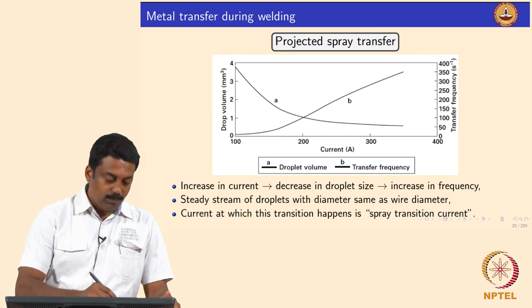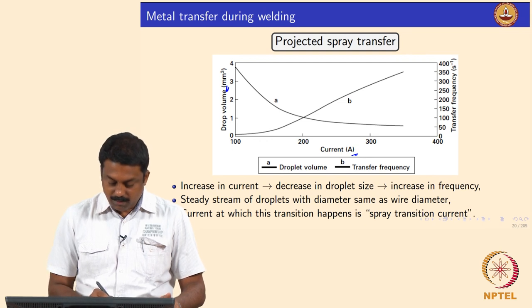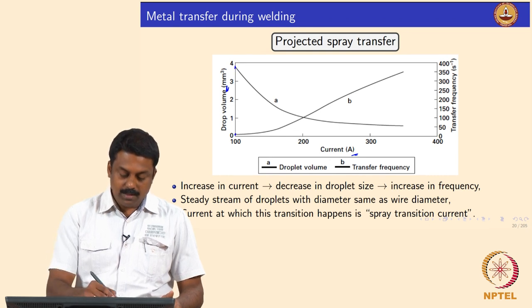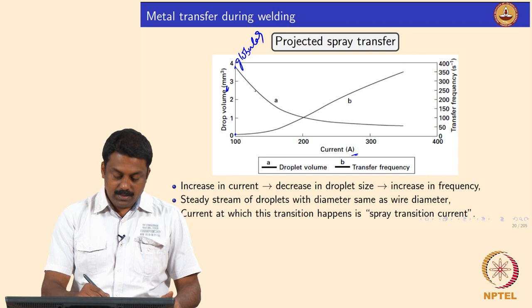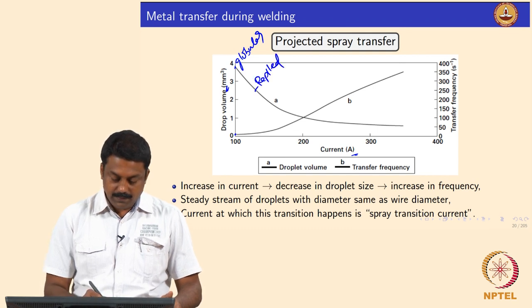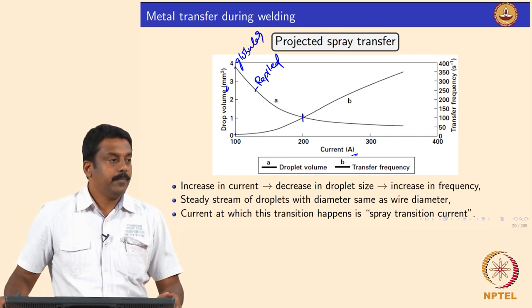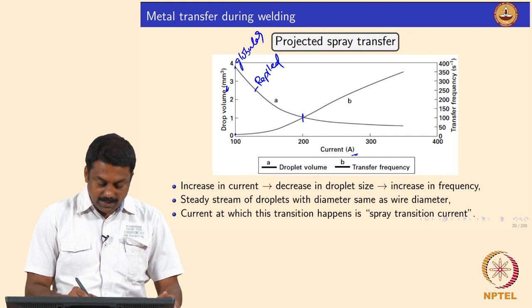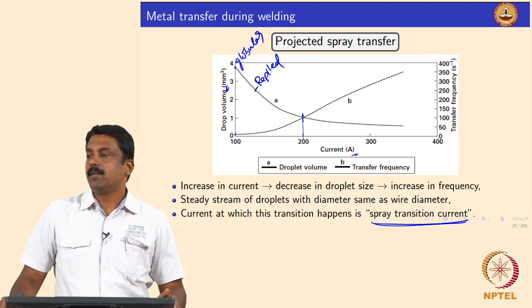On the graph of drop volume as a function of current, at lower current the frequency will be very low and the diameter will be very high — that is globular transfer. If you increase the current, the droplet diameter decreases and the frequency also increases. After a critical current, the globular transfer becomes spray transfer, and that current is known as the spray transfer current or spray transition current.